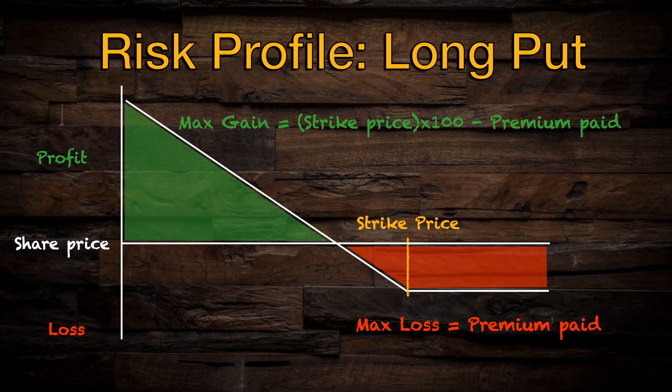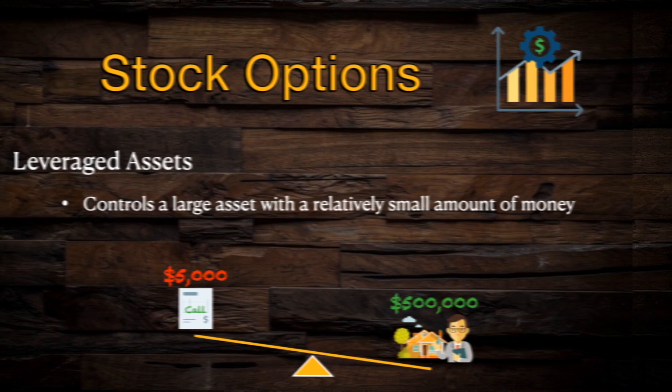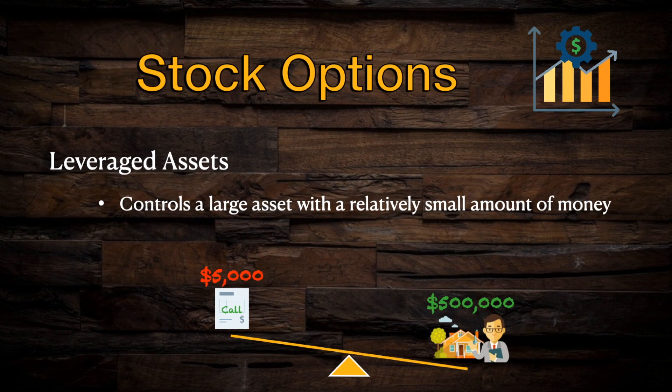When we look at the risk profile of a long put, we can see that this is a risk-defined strategy and has substantial but not quite infinite upside potential, because the lowest the stock value can possibly go is zero. The maximum gain for a long put is your strike price times 100, minus the premium that you paid for the contract. Like all options, long puts are leveraged positions, which means that you can gain significant upside potential by only risking a relatively small amount of capital.